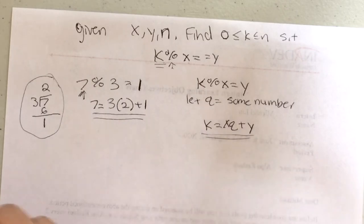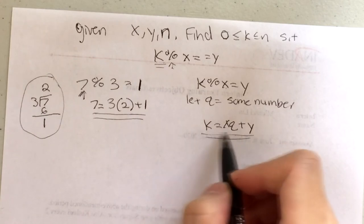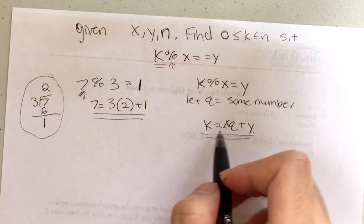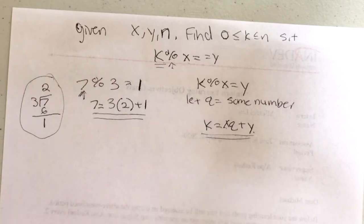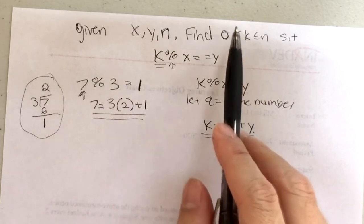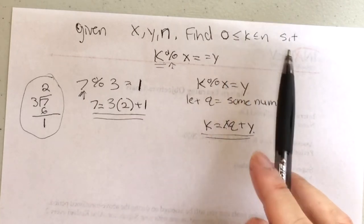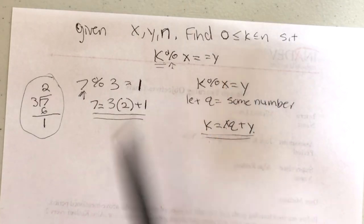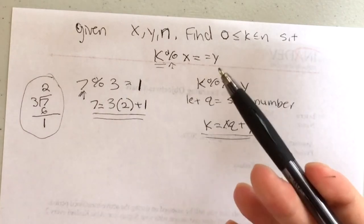That's how we get: k equals x*q plus y. Now our issue is that we have x and y, but we still have two unknowns — we don't know what q is and we don't know what k is. So we have to try to represent k in terms of n and y, because we know that k is between 0 and n.